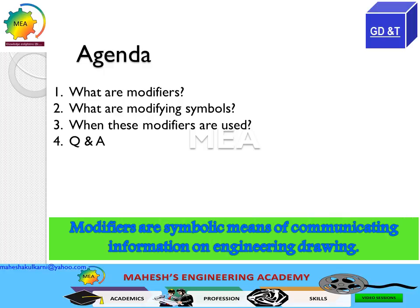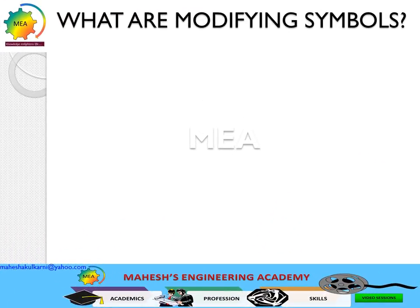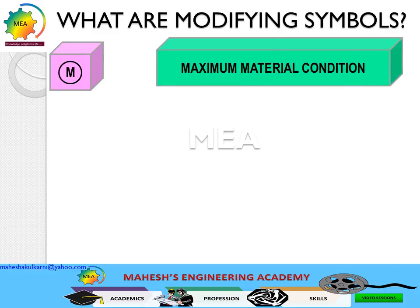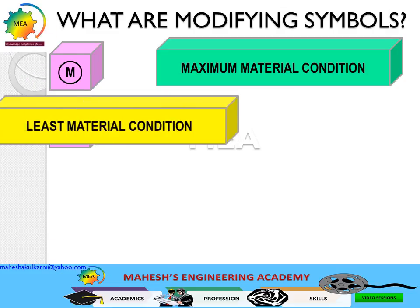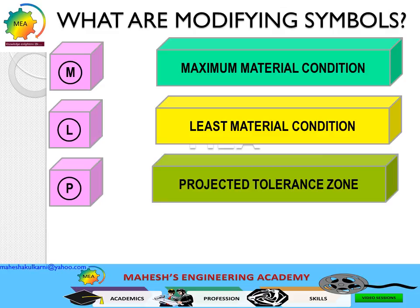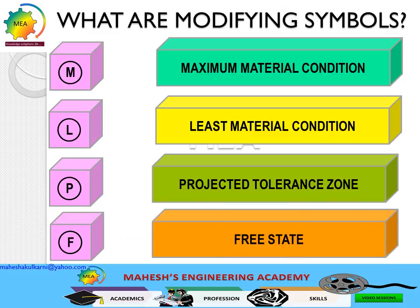The modifiers are symbolic means of communicating information on any engineering drawing. Let us look at the modifying symbols individually. The circled M stands for maximum material condition. The circled L stands for least material condition. The circled P stands for projected tolerance zone. The circled F stands for free state. These modifiers are used along with the feature control frame.